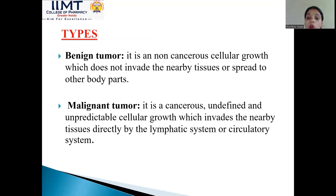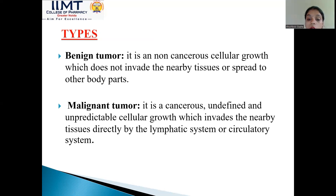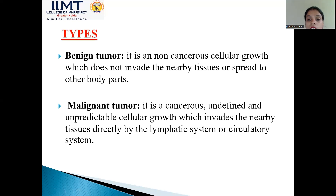In benign tumour, there is a non-cancerous cellular growth which does not invade the nearby tissue — this type does not spread to other body parts. But in malignant tumour, it is cancerous, with unpredictable cellular growth which invades the nearby tissues. This type of cancer spreads through our circulatory system. The benign tumour stays at a particular body part only.